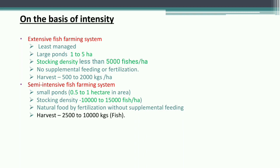In semi-intensive fish farming, it is done in small ponds of 0.5 to 1 hectare, stocking density is 10,000 to 15,000 fish per hectare. Fertilization is given to promote natural food growth, but supplementary feeding is not done. Harvest obtained is 2,500 to 10,000 kg per hectare.